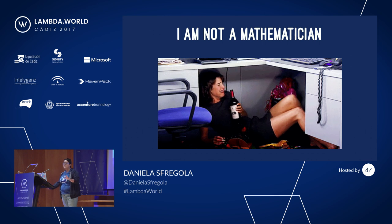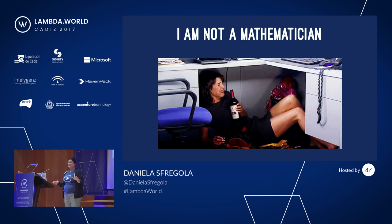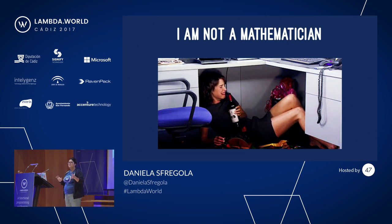So this is not going to be a mathematical introduction, because we've had a few of those already — and plus I'm not a mathematician. This is going to be my practical view on some of the basics of category theory. There are not going to be many formulas, so don't worry about it. Hopefully it's going to be fun and we'll understand the general intuition behind all these nice theories.